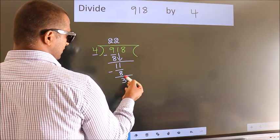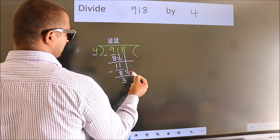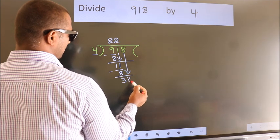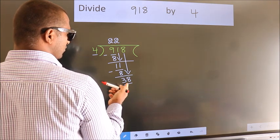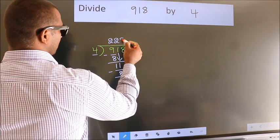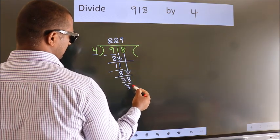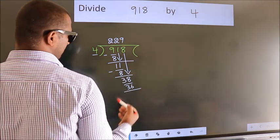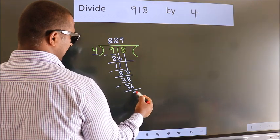After this, bring down the beside number. So, 8 down. So, 38. A number close to 38 in 4 table is 4 nines, 36. Now, we subtract. We get 2.